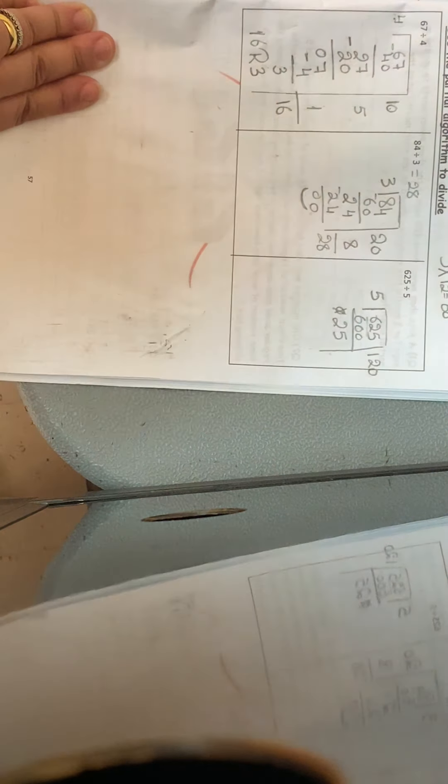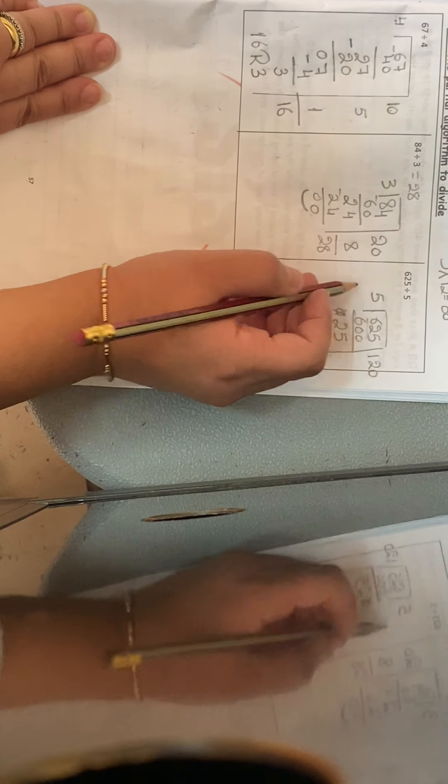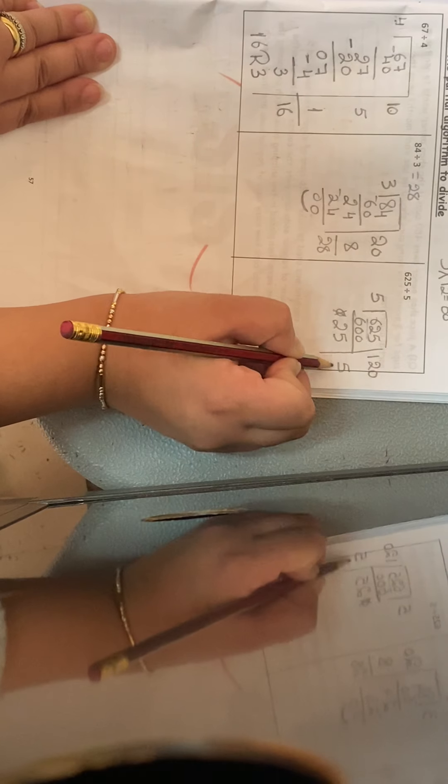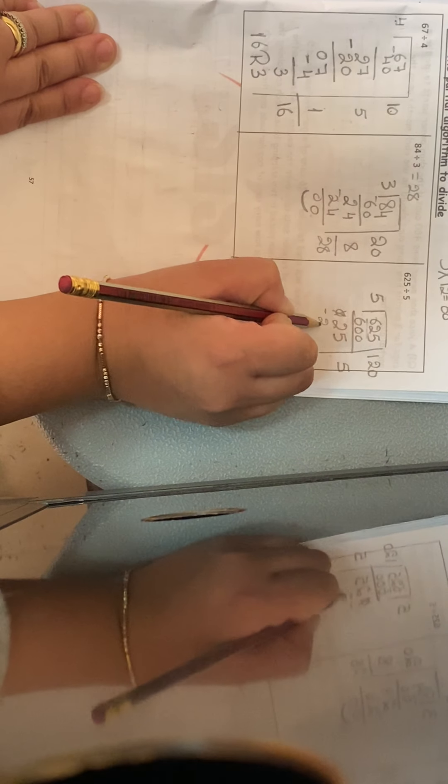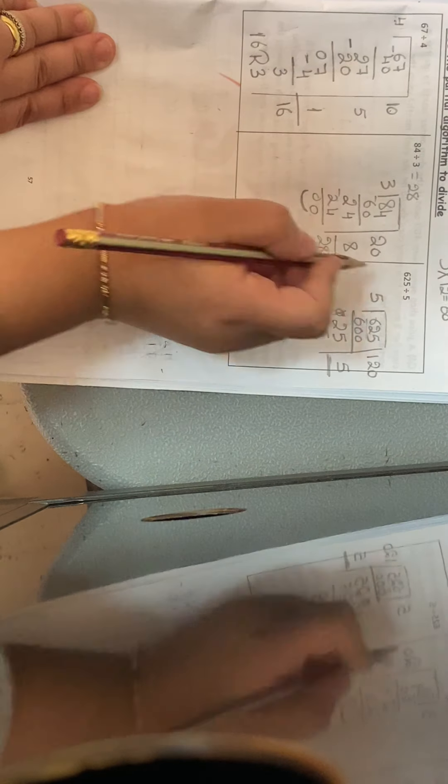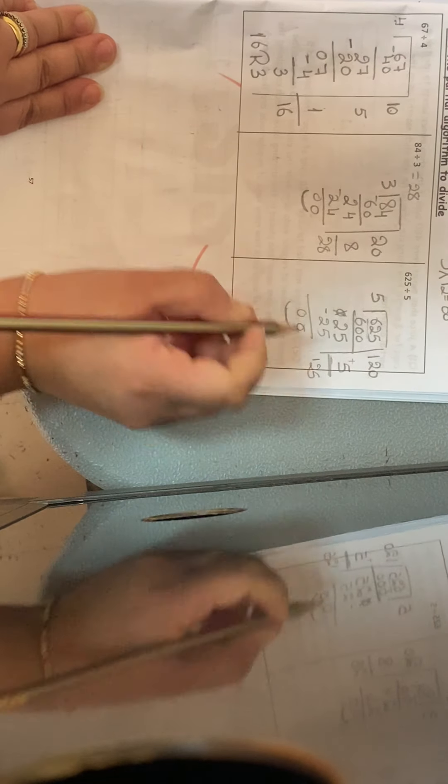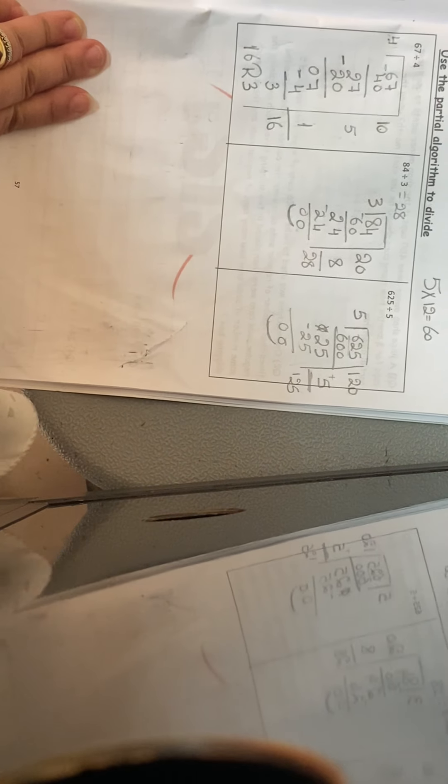Again, what times 5 gives me 25? Or what times 5 gives me 20? But here I know what times 5 gives me 25 is 5 immediately. So here is the 25. My happy face, 0. So the answer is 120 plus 5 is 125. And that's it.